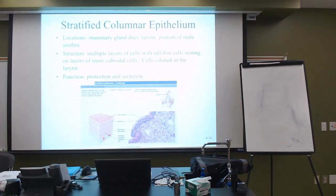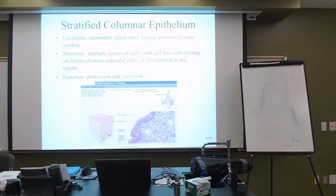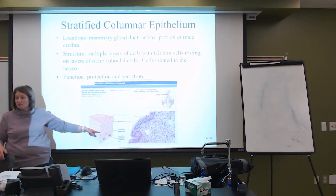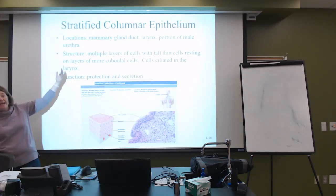In the category of stratified columnar, those are tall rectangular cells. However, they're not very prominent in the body, being in two or more layers. We find them in the mammary gland duct, the larynx, and the portion of the male urethra. It's going to be multiple layers, and it will look like they're sitting on top of cubes, but they are the tall thin cells — the bottom is more cuboidal-like.